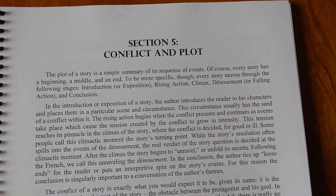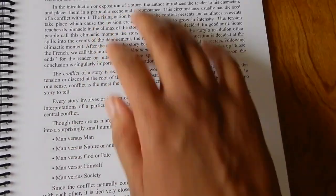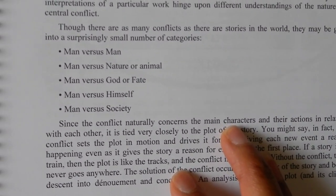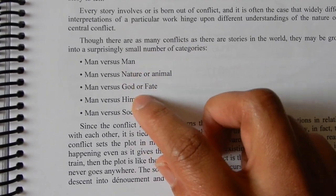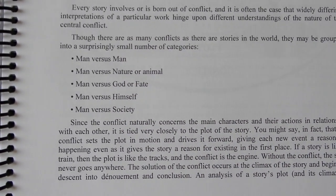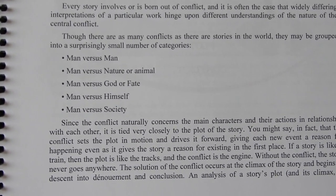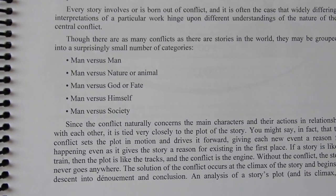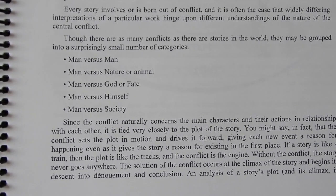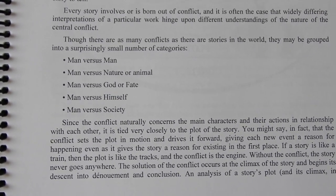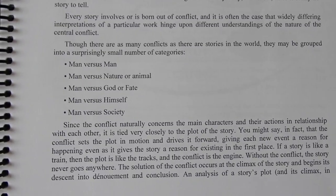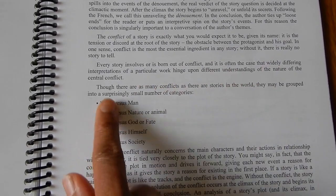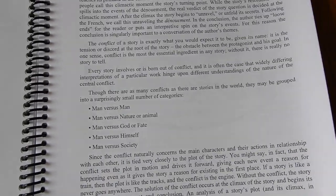Section five is conflict and plot — one of my favorites. He goes over the five types of conflicts: man versus man, man versus nature or animal, man versus God or fate, man versus himself, and man versus society. This is one of the first things I taught my kids, and now through every book or story we read I'll ask them what kind of conflict it is and they can tell me. Even if I don't have a ton of questions, I can always ask this and we can have a really good discussion.